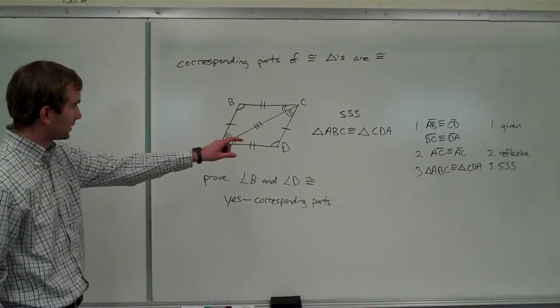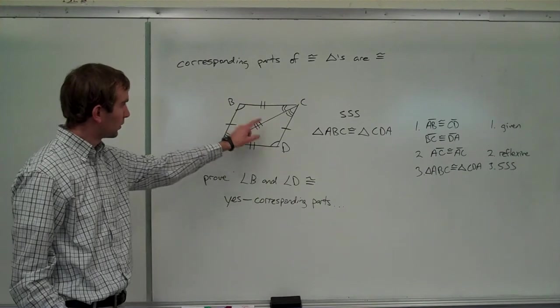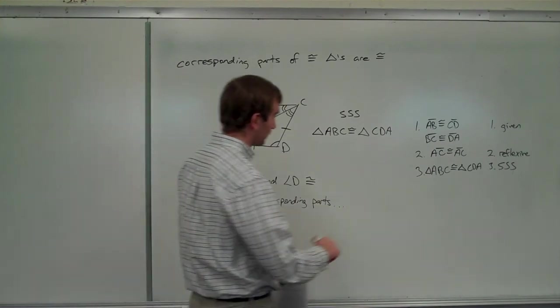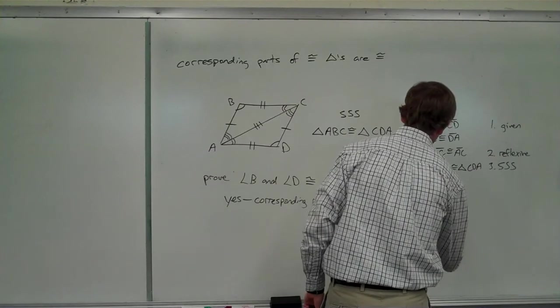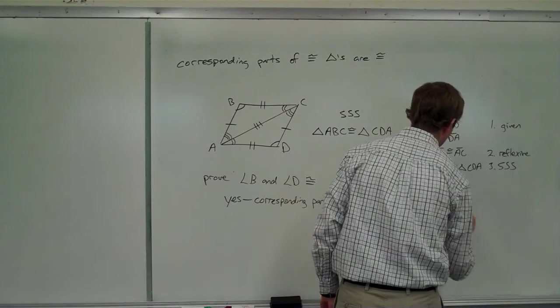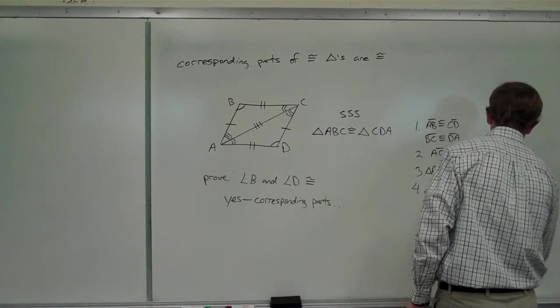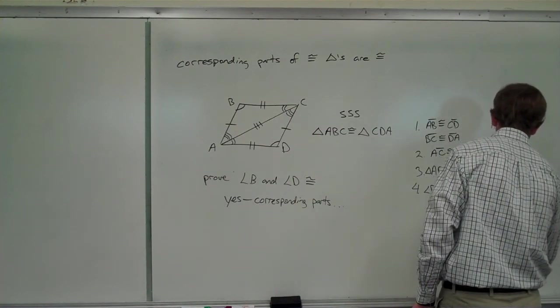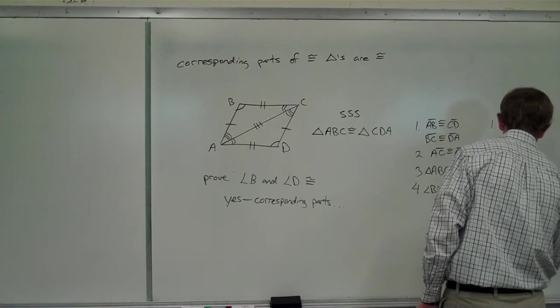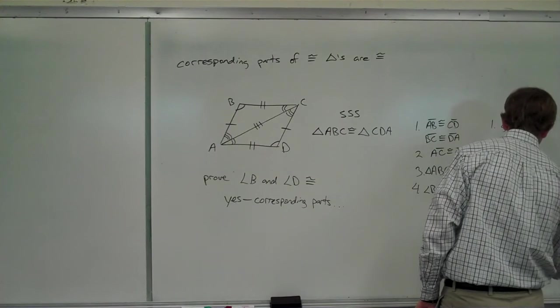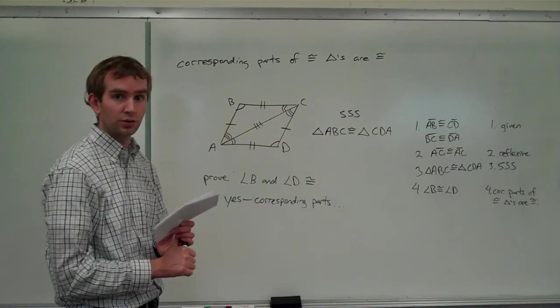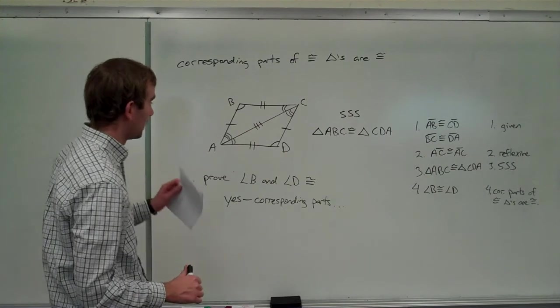We know that since the two triangles are congruent, then, yeah, all the corresponding parts, which includes B and D, also have to be congruent. So, angle B is congruent to angle D because corresponding parts of congruent triangles are congruent. And there's abbreviation at its best right there. Corresponding parts of congruent triangles are congruent. That's all.